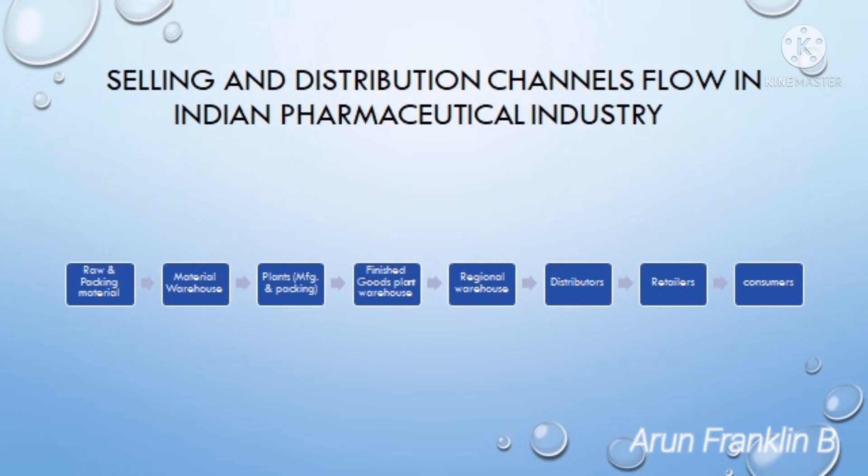That is, how pharmaceutical industries manufacture and sell drugs — how the medicines reach the end customers, that is the patients. First of all, the pharmaceutical industries or pharma companies procure the raw materials and packing materials, which are transferred into a material warehouse.